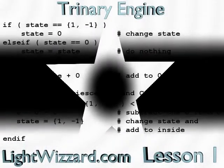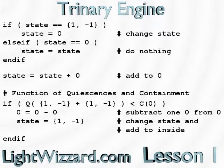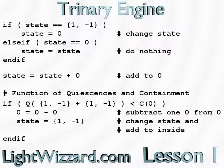Laws of containment: if the balanced function is in a state of ones, it will change states to a zero. If a balanced function is in a state of zero, no state change is necessary. Containment then adds to the existing outside state of zero. The function of containment determines if it can add more ones to it by checking the function of quiescence. If the quiescence of ones plus another set of ones is less than the required number of containment of zero to contain them, it will then change the state of a zero to ones and add it to the inside equation. Otherwise the outside zero is allowed to grow. Once the function of containment adds a set of ones to the function of quiescence, the function of quiescence will determine if it can be contained by checking with the function of containment, as it checks in balance.